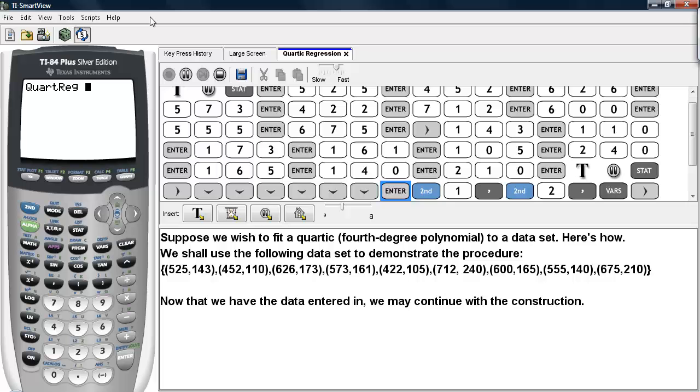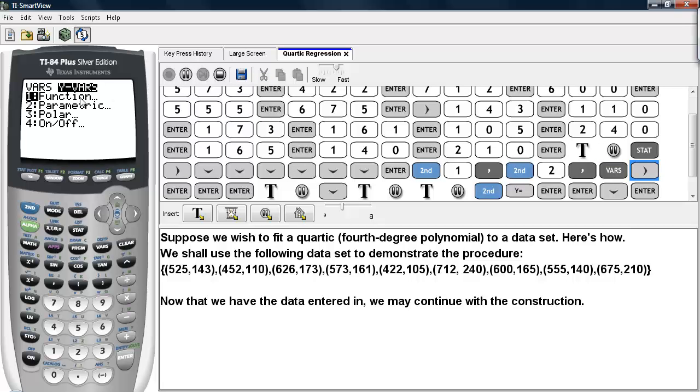So we'll go ahead and select that command. We'll tell it to use L1 as the x-coordinates, and then a comma. And then L2 as the y-coordinates, and then another comma. And we're going to hit VARS, the VARS button. We're going to select YVARS, and we're going to select FUNCTION. And we'll select Y1 to store the resulting function into that plot structure.